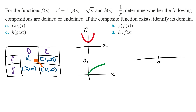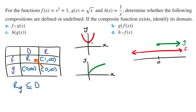The domain of f is all real numbers, and the range of g is from 0 to infinity. From the number line, we can see that the range of g is a subset of the domain of f. Therefore, f of g of x exists.